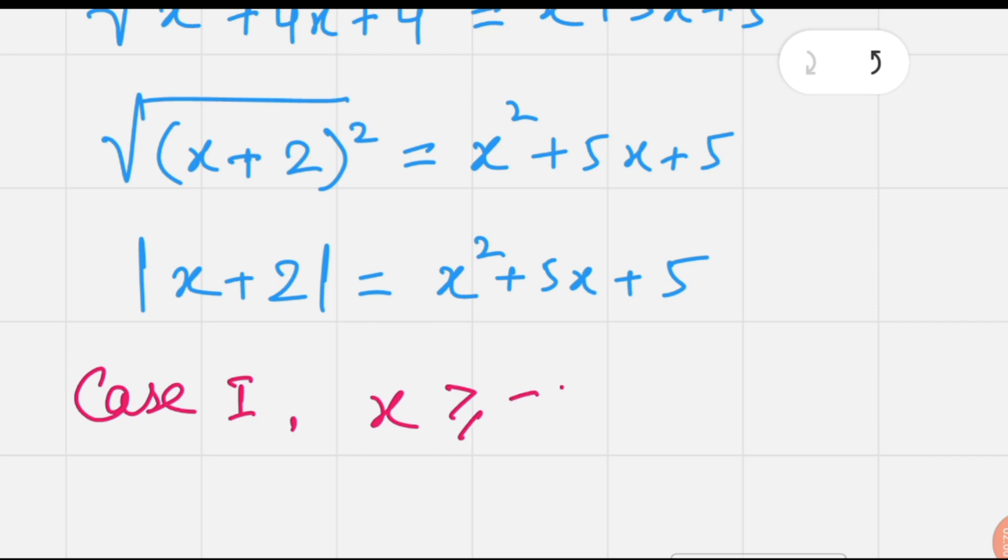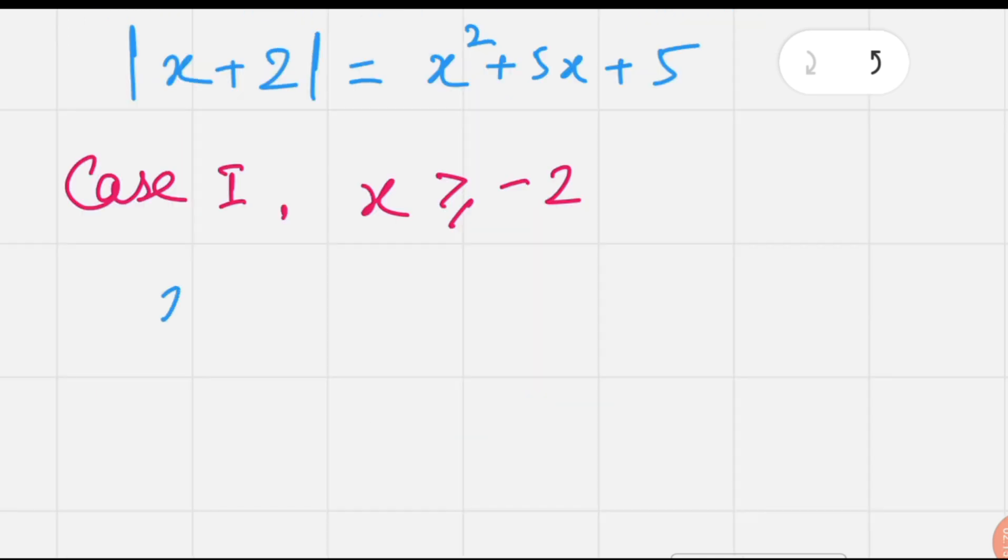When x is greater than or equal to -2, the absolute value definition of x + 2 is positive: x + 2 = x² + 5x + 5.